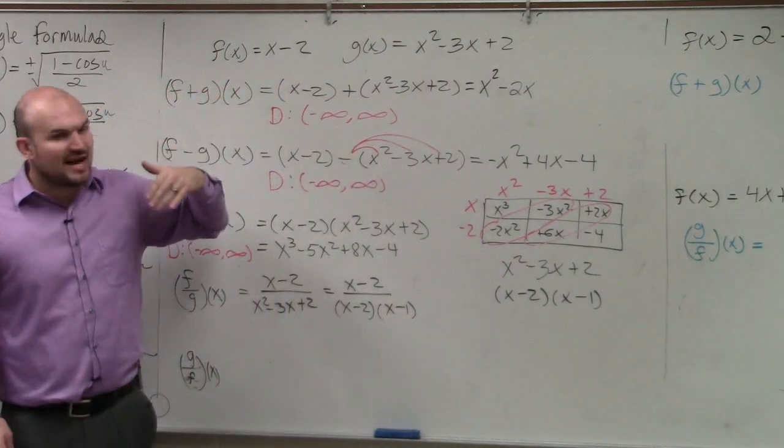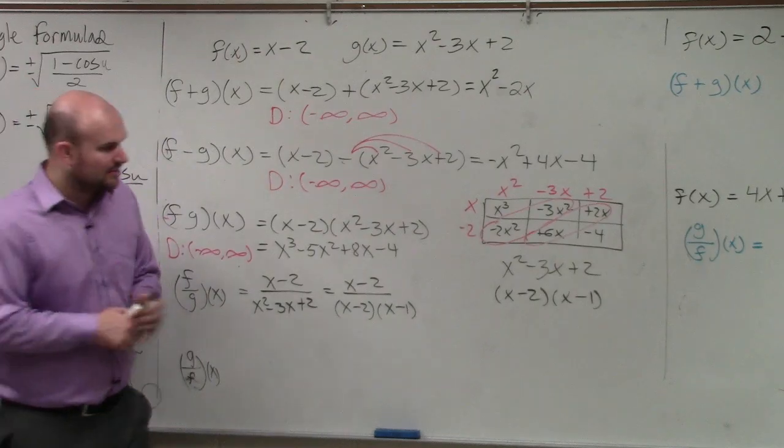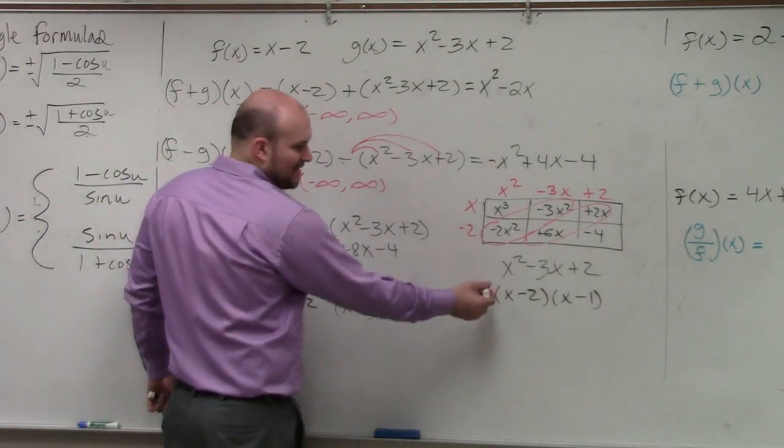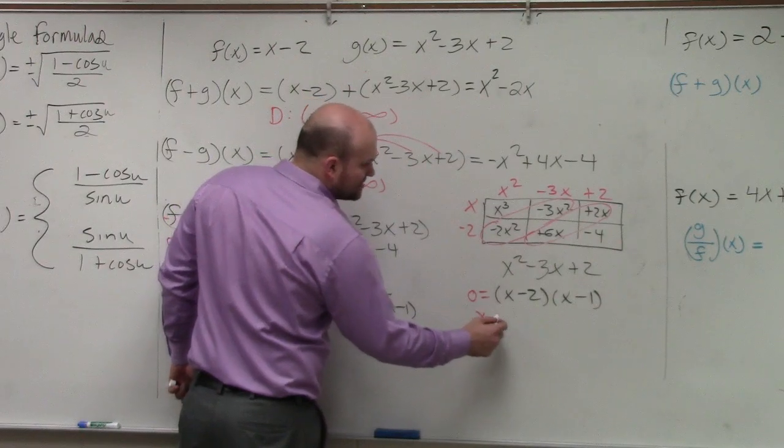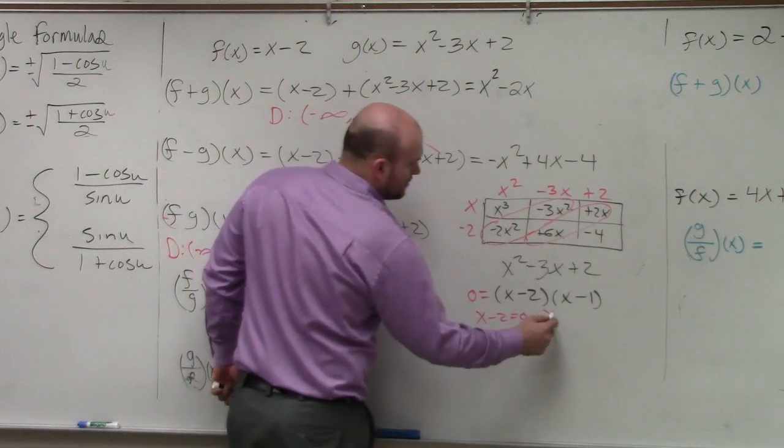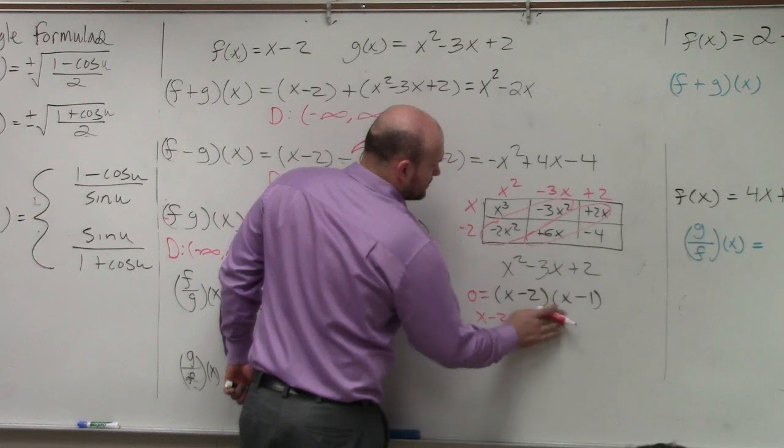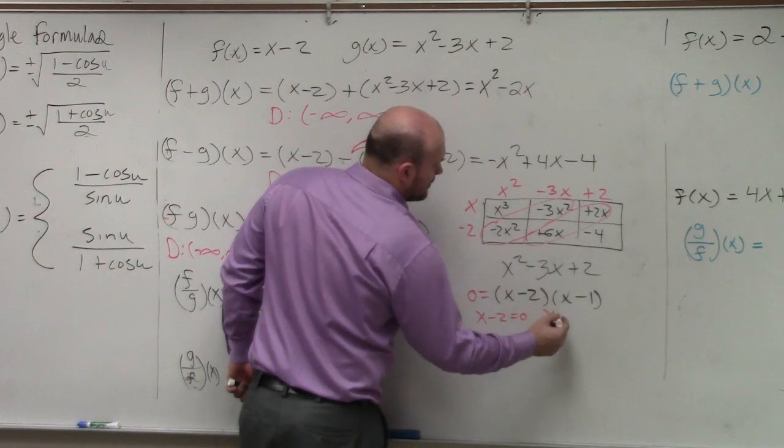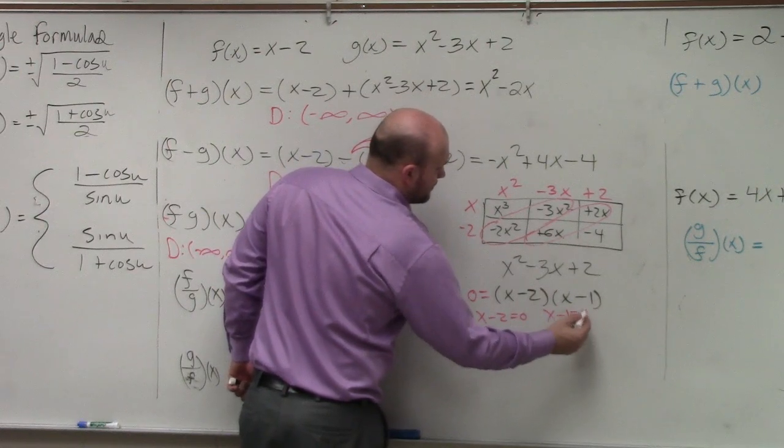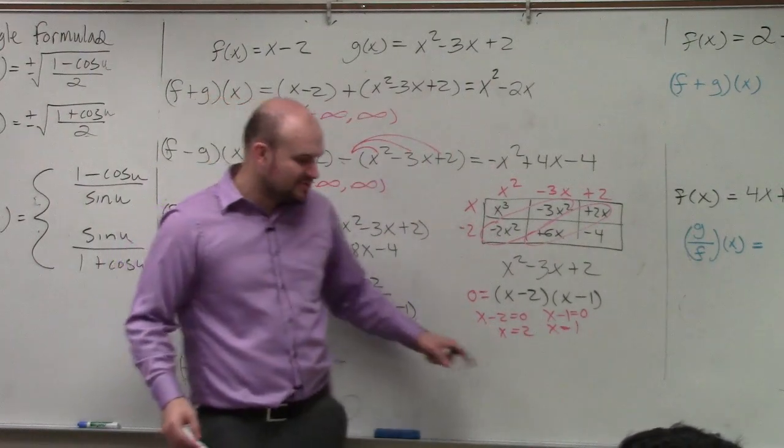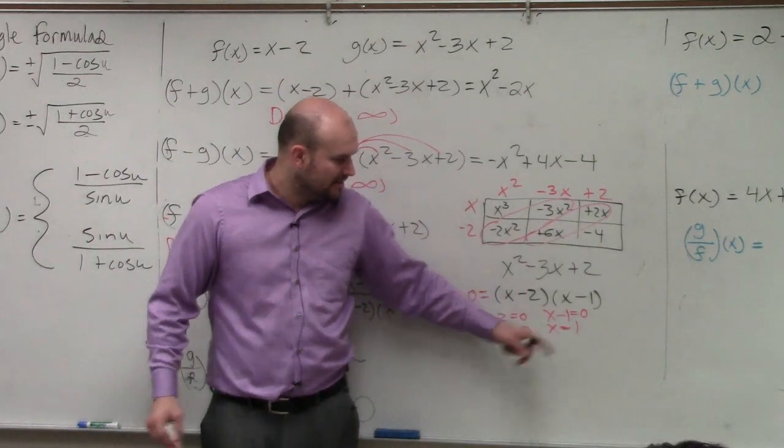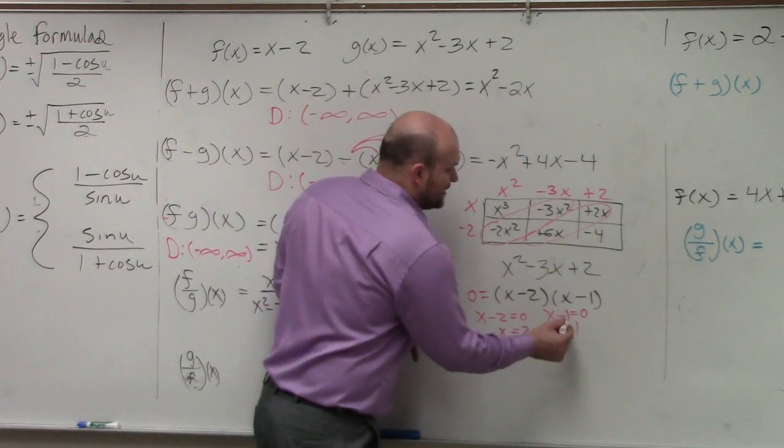So this is my denominator. If I just set my denominator equal to 0, I can now apply the 0 product property, so I could say x equals 2 and x equals 1. That means when x equals 2 or x equals 1, my denominator is going to equal 0.